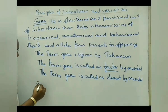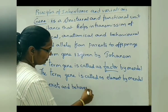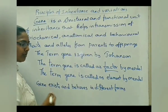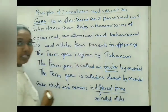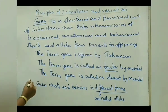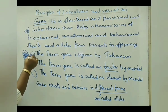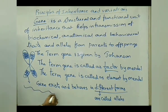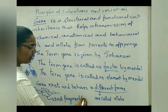Gene exists and behaves in different forms. These different forms are called alleles. The exact location of the gene is on the chromosome. The chromosome has highly coiled DNA as genetic material. If you zoom into that coiled structure written in double helical form, when we take out a small fragment, that DNA fragment is called as a gene.